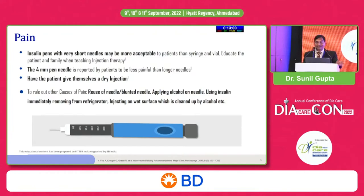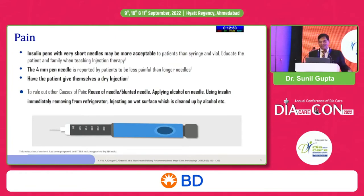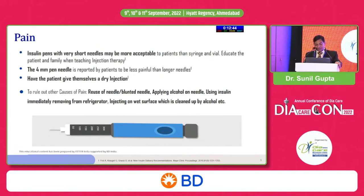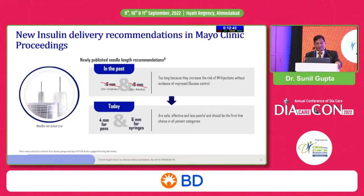Injecting on a wet surface already cleaned by alcohol — before it evaporates and dries — causes micro-drops of alcohol to enter with the prick, causing burning and local reactions. The earlier recommendation from Mayo Clinic was 6 mm for children and 8 mm for adults, which has since been changed to 4 mm for pens and 6 mm for syringes. Our practitioners should know this new guideline.